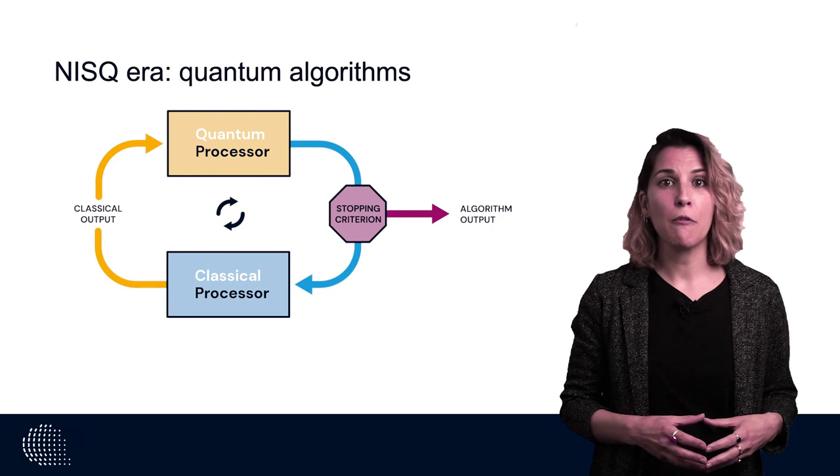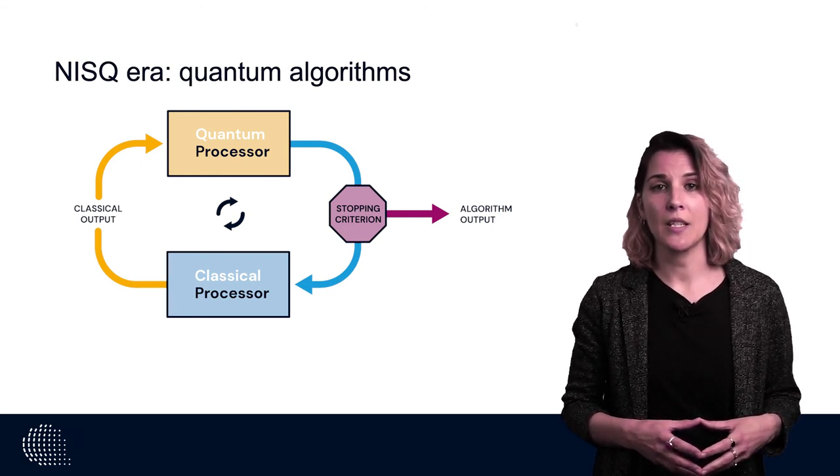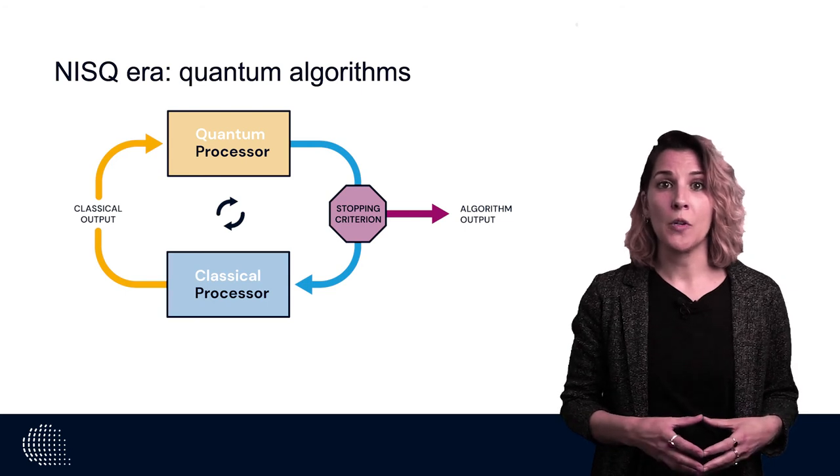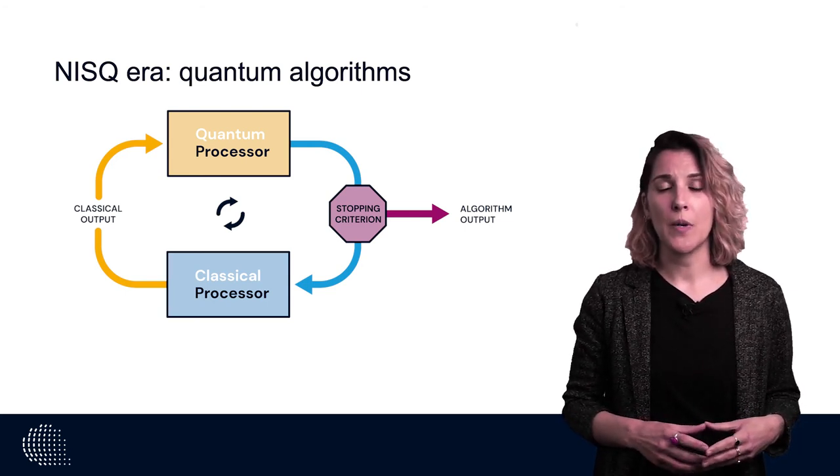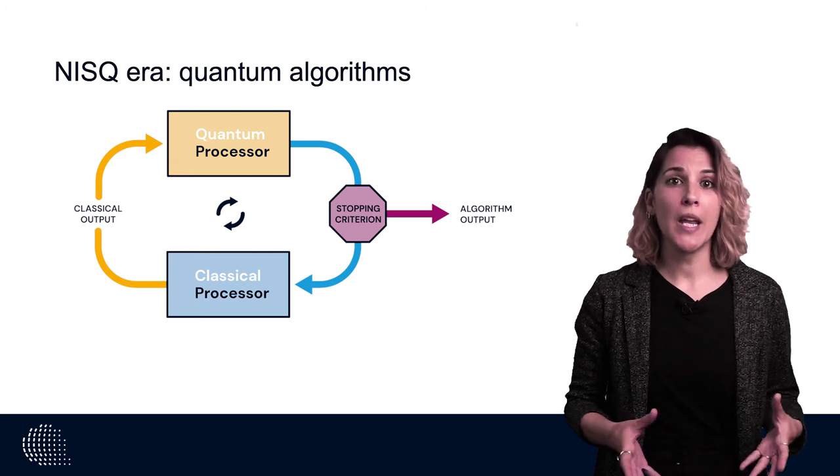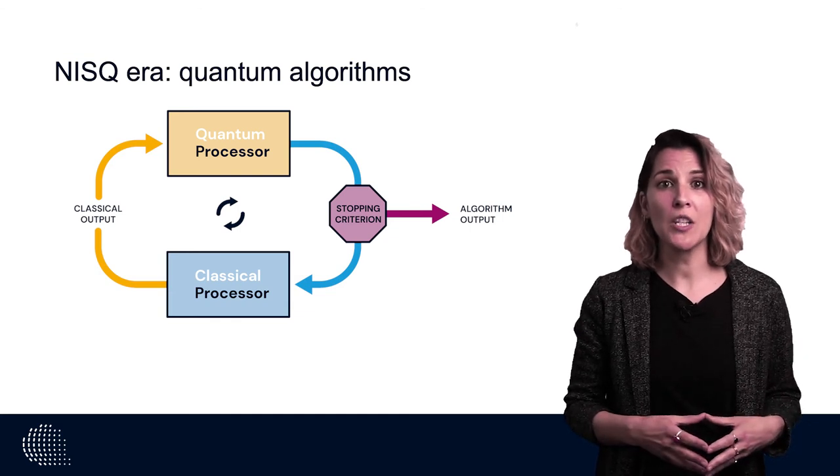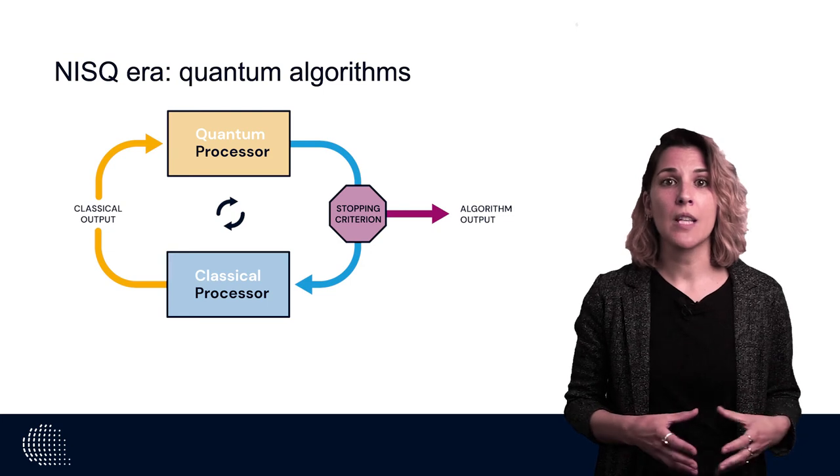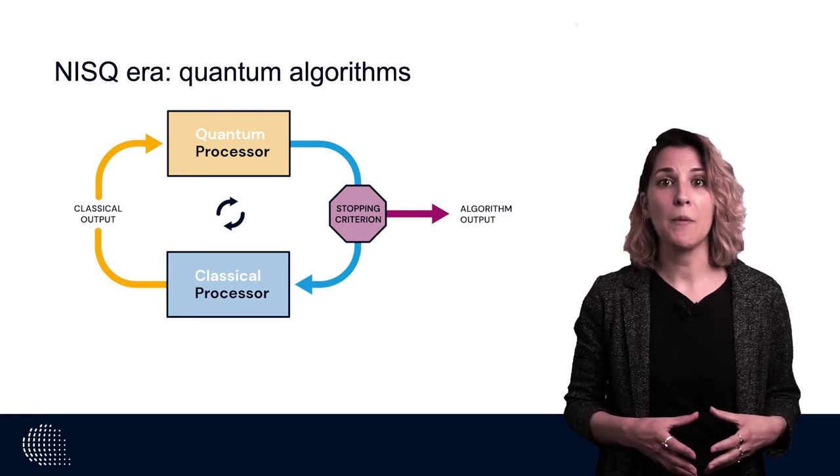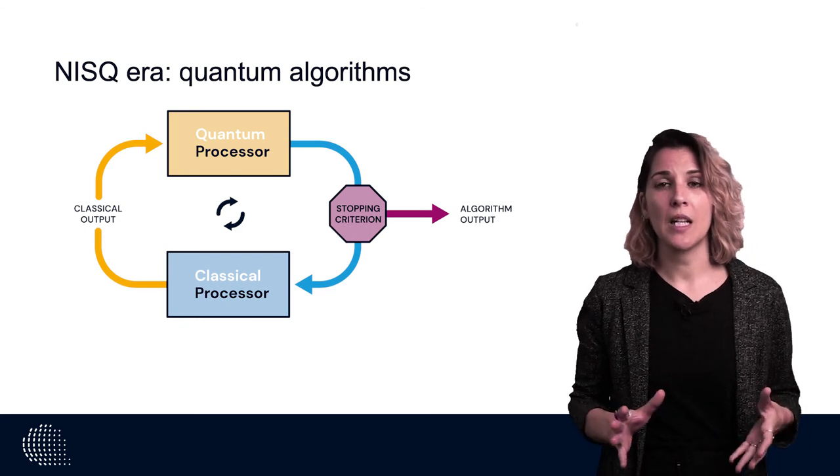As we have shown before, several quantum algorithms already existed in the early 90s. They promised from polynomial to exponential speedups compared to their classical counterparts. Although we will have to wait to have a universal fault-tolerant quantum computer to demonstrate their full potential, with current quantum processors we can already run some algorithms that follow a hybrid approach in which a quantum processor is combined with a classical processor.